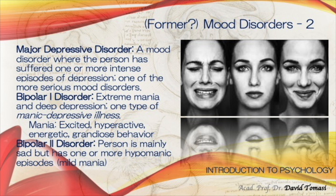Mania involves excited, hyperactive, energetic, and grandiose behavior. Bipolar I is identified by one or more full manic episodes, while Bipolar II involves hypomanic episodes — mild mania — along with deep depressive episodes. We should not consider Bipolar II a milder or simpler version of Bipolar I; they are distinguished by full mania versus hypomania.